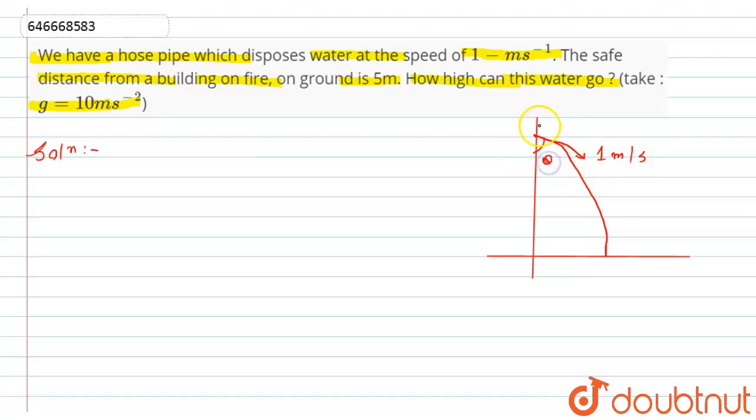angle theta with respect to vertical. This distance is given to us as 5 meters. We have to find how high this water will go. This is a question regarding trajectory, so we will use